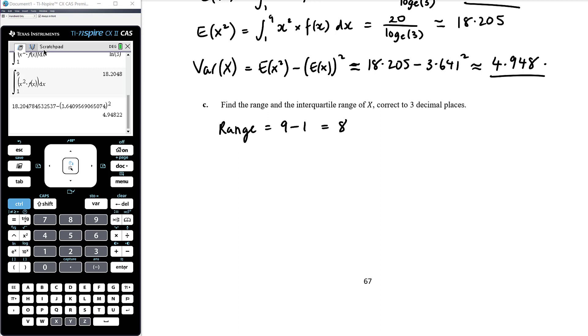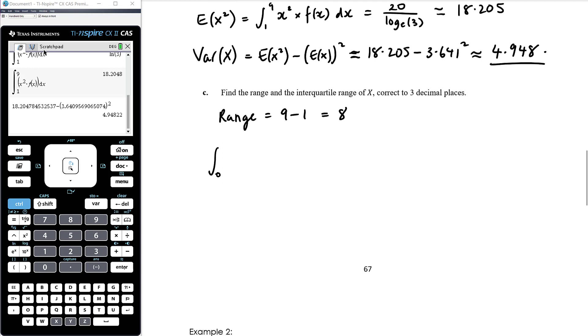OK, interquartile range, we're going to need to calculate q1 and q3. OK, so to find q1, it's the 25th percentile. So the integral from one up to q1 of our function has to be 0.25. Again, we're three decimal places, so I can work with decimals there rather than writing a quarter. OK, and when I do that, it's going to give me q1. So if I solve shift plus from one up to let's say q of f of x dx has to be equal to 0.25, solving for q. OK, obviously you have to be between 1 and 9, so q is going to be 1.732.